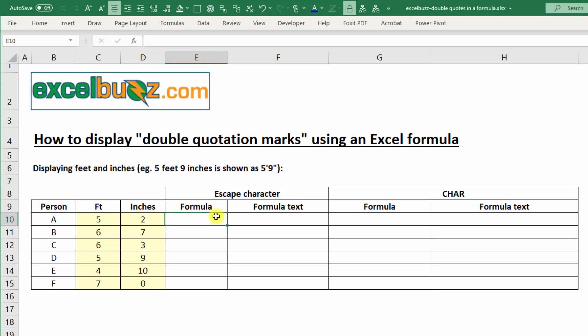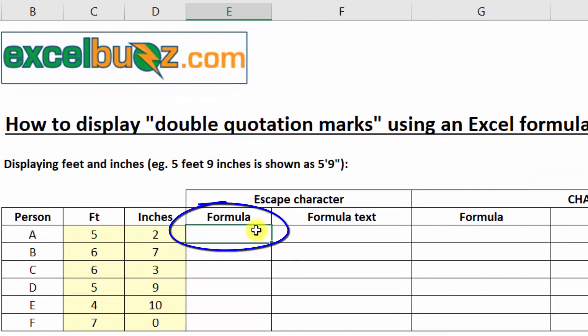But now, in column E, we want to display their height. For example, person A, we would say 5' with a double quotation mark to indicate 5 foot 2.